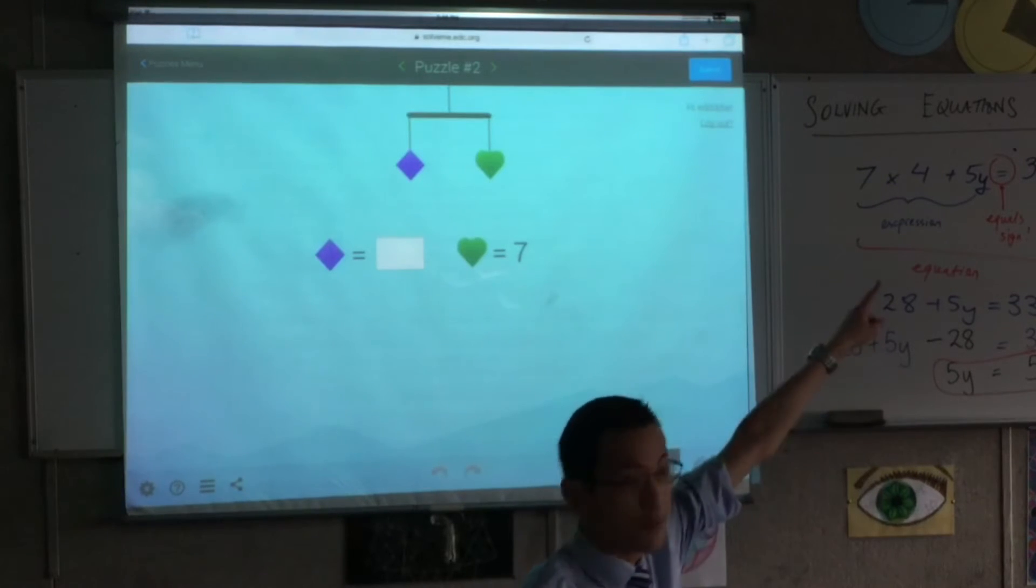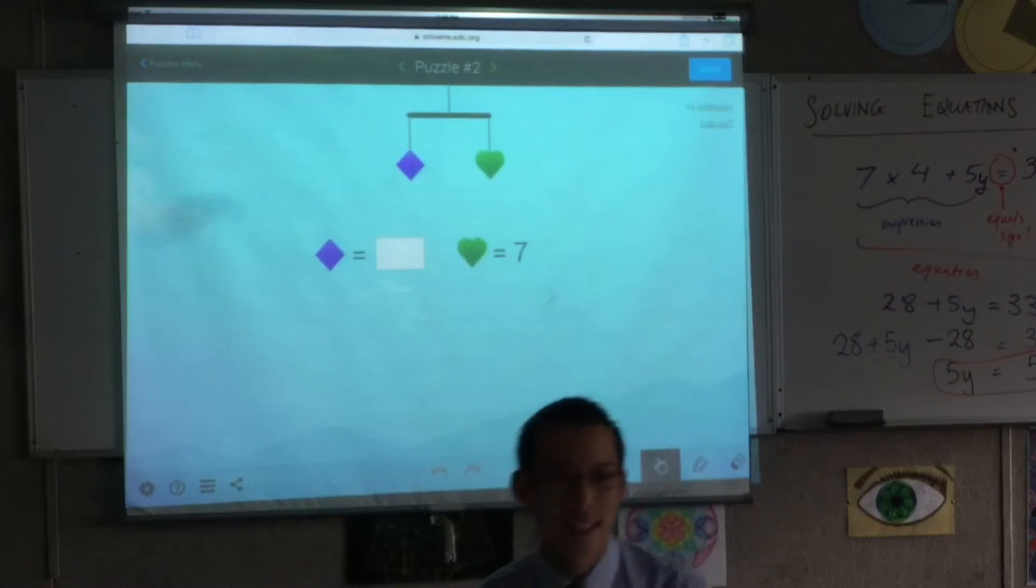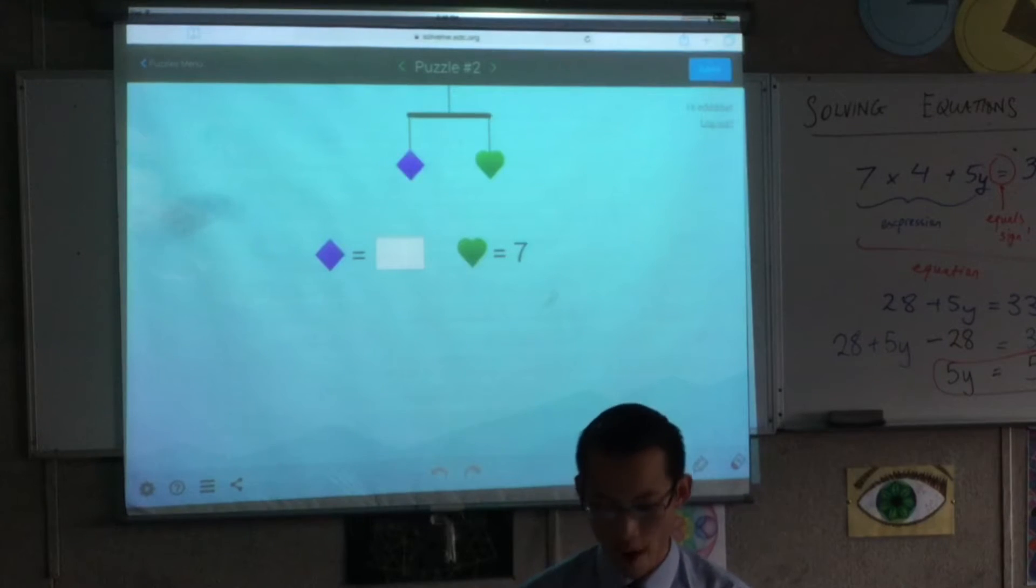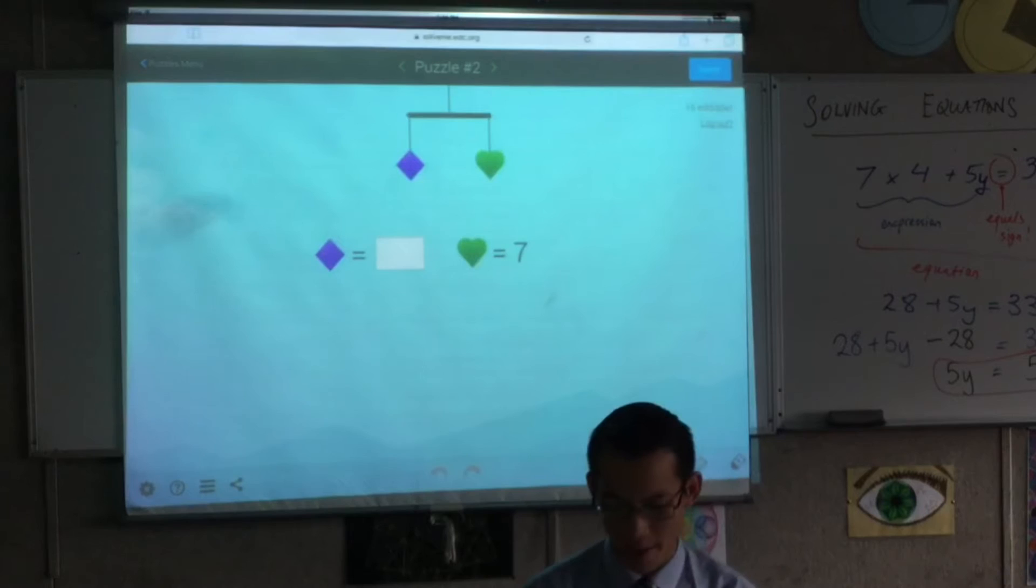So just like I've got up on my board, this is a balanced system. You've got two things there and one is exactly equal to the other. So if that green heart is 7, what must the purple diamond be? Must also be 7.